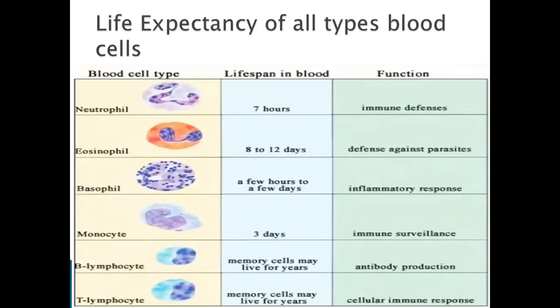Regarding the life expectancy and main functions of blood cells: neutrophils have a lifespan of seven hours and their main function is immune defense. Eosinophils live eight to twelve days and defend against parasites. Basophils live a few hours to a few days and mediate inflammatory response. Monocytes have a lifespan of three days for immune surveillance. B lymphocytes are memory cells that can live for years and produce antibodies. T lymphocytes are also memory cells that live for years and mediate cellular immune response.